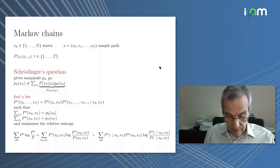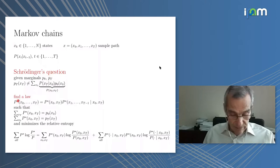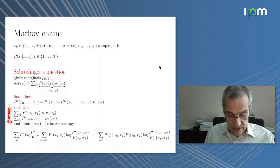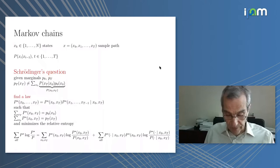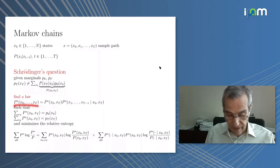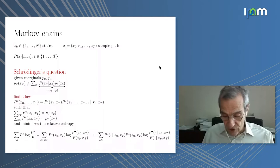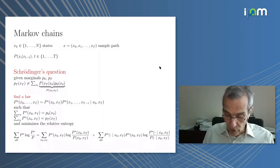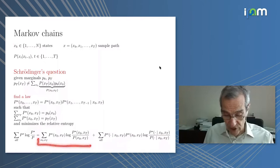If you have the transition from beginning to end and then you bring into account the initial distribution, they don't match. So the problem amounts to finding a new law, star here means optimal, which abides by the two marginals and minimizes the relative entropy to the prior law on the path space.